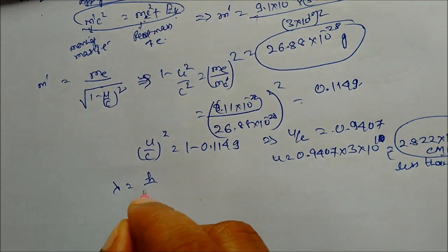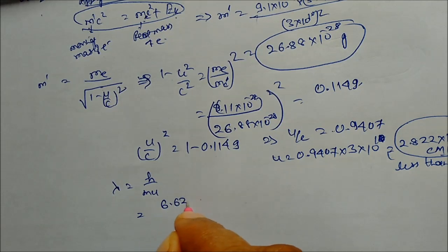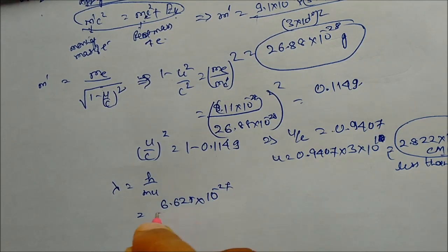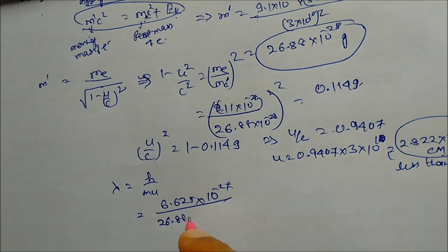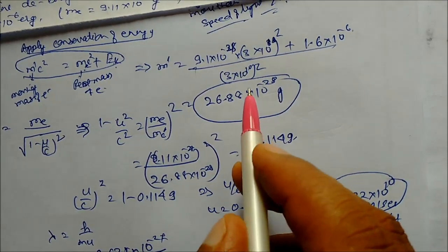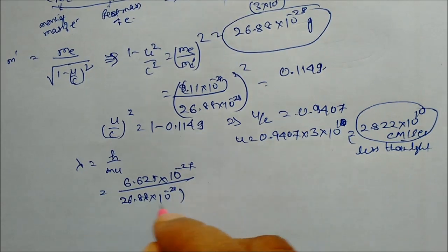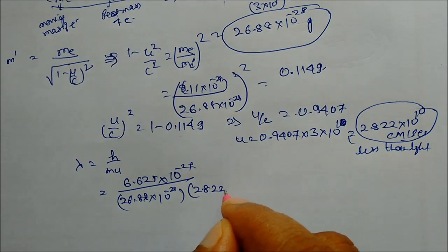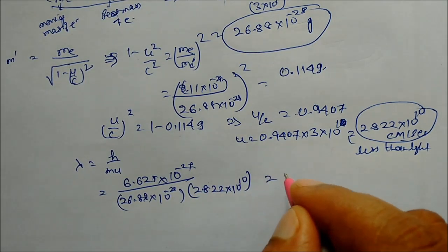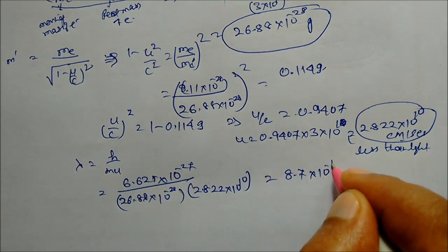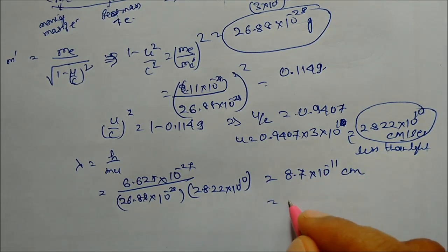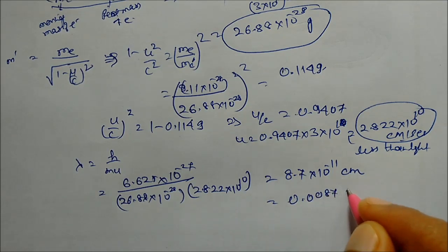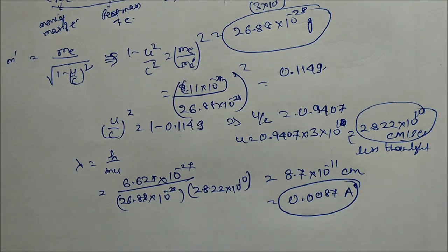Now calculating the de Broglie wavelength using relativistic values: lambda equals h upon m' times u. With h = 6.625×10⁻²⁷ erg·s, m' = 26.88×10⁻²⁸ grams, and u = 2.822×10¹⁰ cm/s, on solving we get lambda equals 8.7×10⁻¹¹ centimeter, or 0.0087 angstrom. This is our answer.